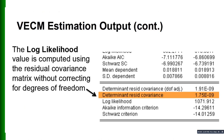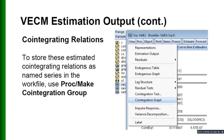In the VEC estimation output, the log likelihood value is also computed using the residual covariance matrix without correcting for degrees of freedom. We can also see some cointegrating relations under the View menu, and we can store these estimated cointegrating relations as named series in the workfile using Proc > Make Cointegration Group.